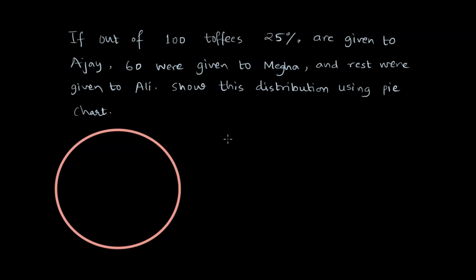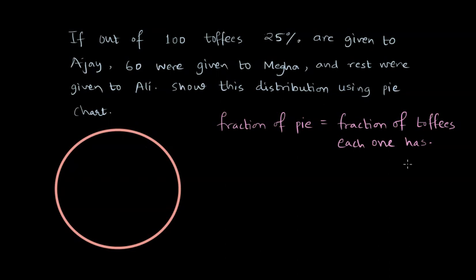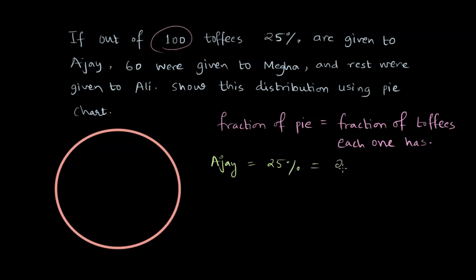Here is what we want to compute. We need the fraction of the pie which corresponds to the fraction of toffees each person has received. We can find this because we know the total number of toffees and how much everybody has got. Ajay has got 25% of the toffees. 25% is itself a fraction — it is equivalent to 25/100, or 1/4. So 1/4 should be the area in the circle corresponding to Ajay's toffees.